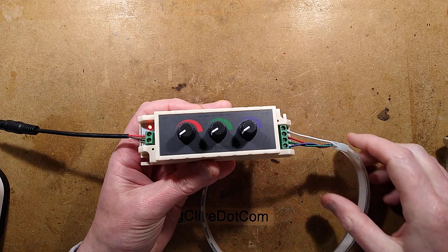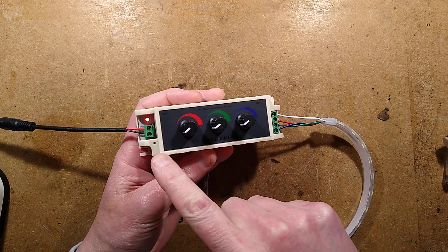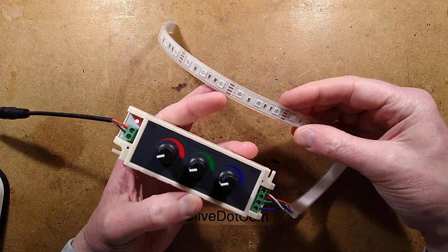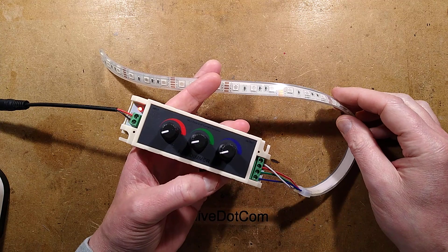A three channel dimmer for DC loads. This one can run in 12 or 24 volts.